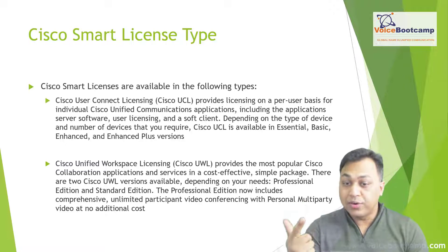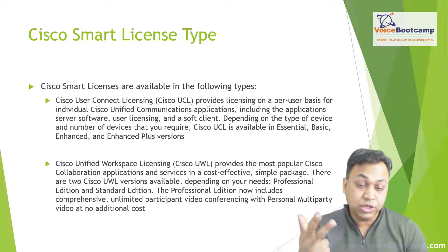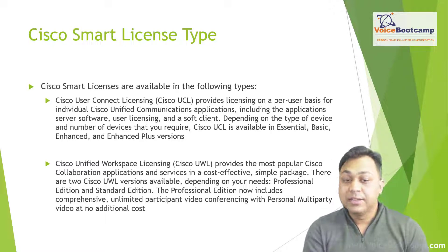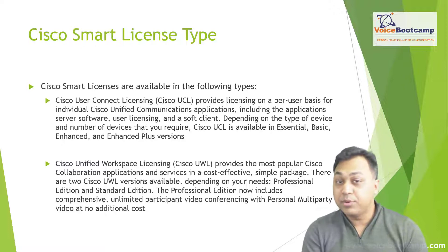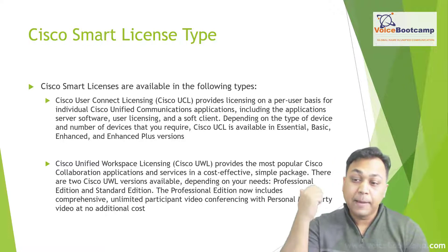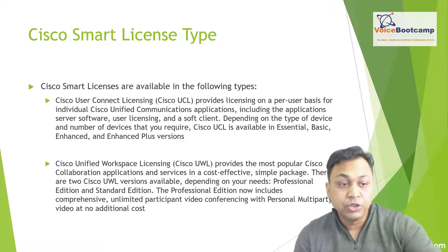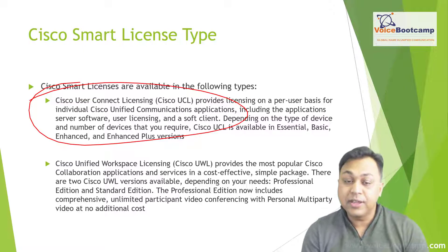Smart licenses are available in the following categories. First, Cisco User Connect Licensing (UCL) provides licensing on a per-user basis for Cisco Unified Communication Manager applications, including application server software, user licensing, and soft clients. Depending on the type and number of devices required, Cisco UCL is available in Essential, Basic, Enhanced, and Enhanced Plus versions.